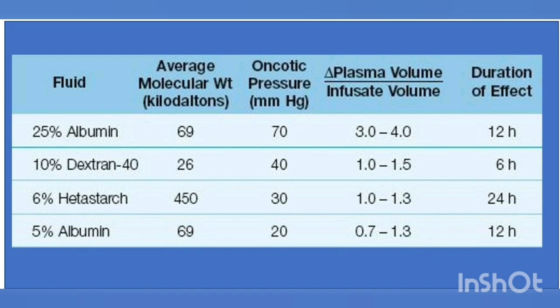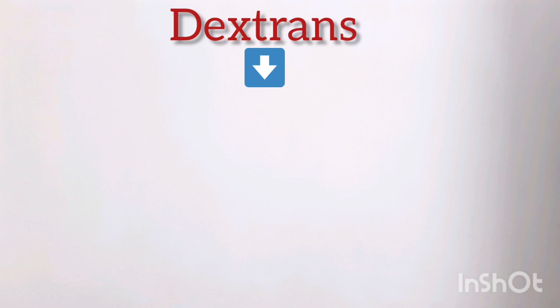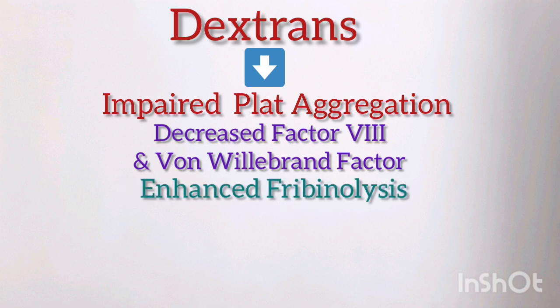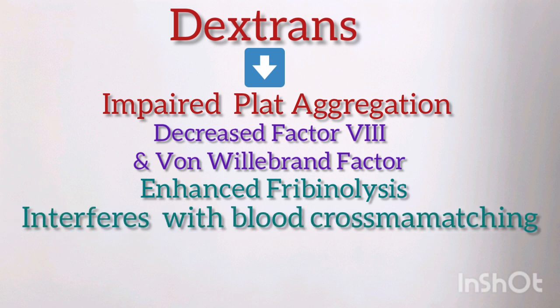Dextran produces a dose-related bleeding tendency that involves impaired platelet aggregation, decreased levels of factor VIII and von Willebrand factor, and enhanced fibrinolysis. The hemostatic effects are minimized by limiting the daily dextran dose to 20 ml per kg. Dextran also coats the surface of red blood cells and can interfere with the ability to cross-match blood; red cell preparations must be washed to eliminate this problem.